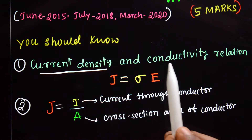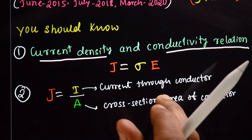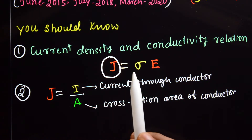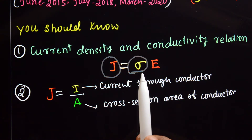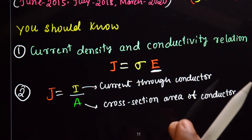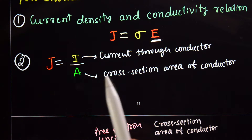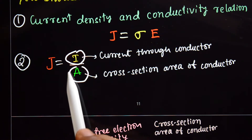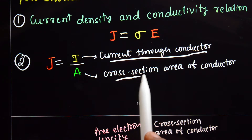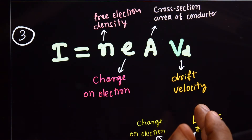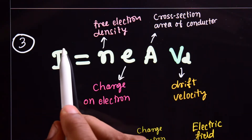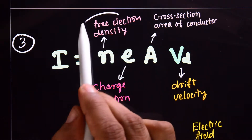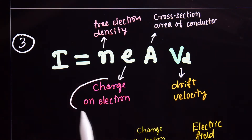To answer this topic, you should know a few things. First, the relation between current density and conductivity: j equals sigma times E, where j is the current density, sigma is conductivity, and E is the electric field. Second, the definition of current density: j equals I divided by A, where I is the current through the conductor and A is the cross-sectional area.